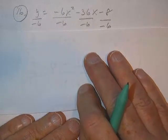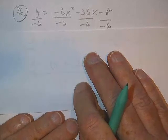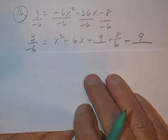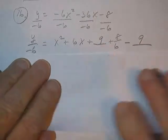So first you divide everything by negative 6. Okay, and then you put a blank in here.